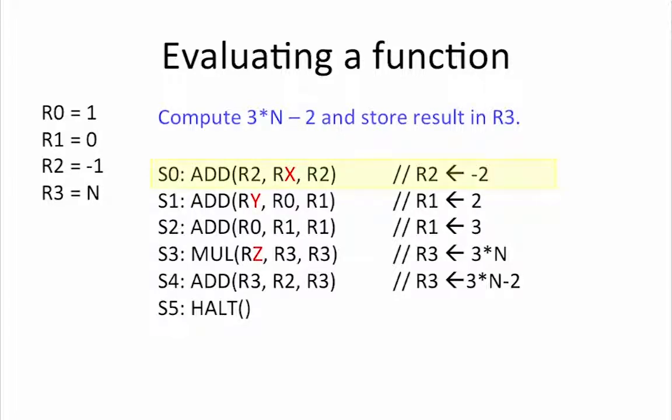Let's begin by looking at state S0. We want to end up with a value minus 2 in R2 by adding R2, which currently holds minus 1, to some register. In order to produce minus 2, we need to add minus 1, which means that Rx equals R2.